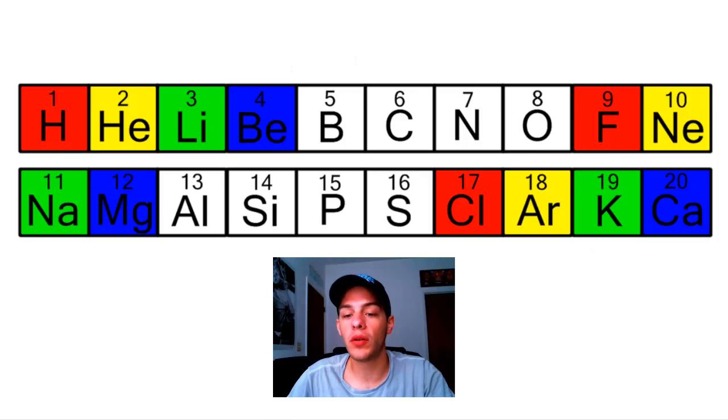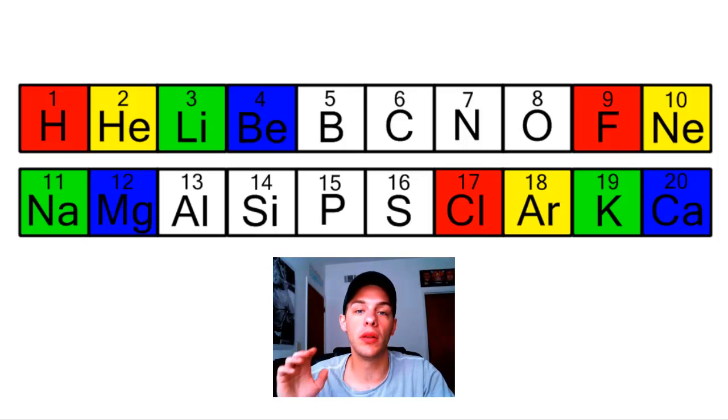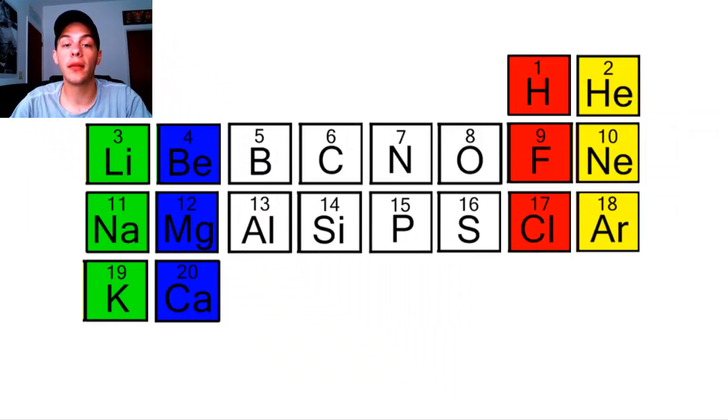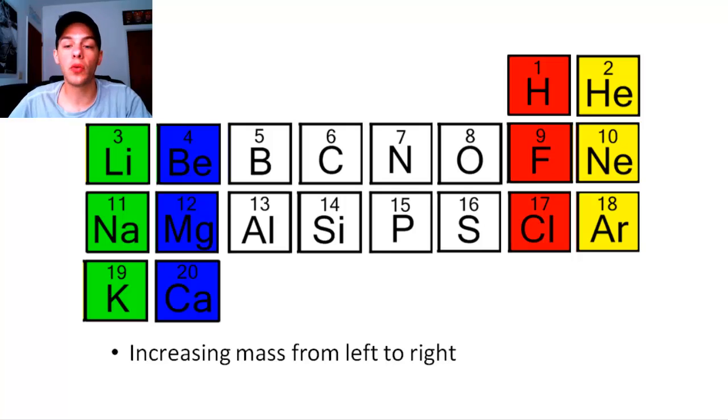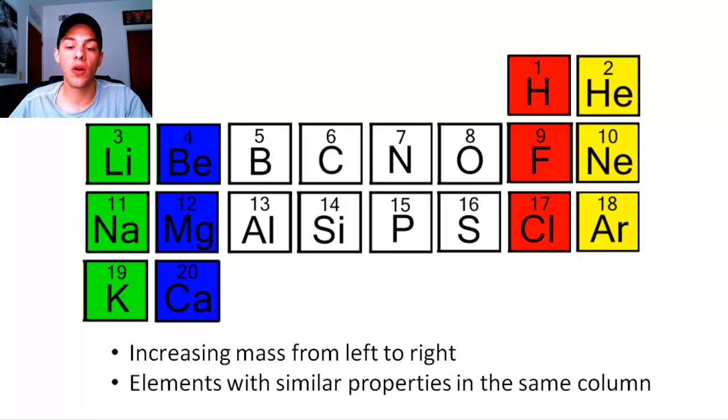And basically what Dmitry Mendeleev did was he constructed a table where the atomic mass of the elements increased from left to right. And also he put elements with the same chemical properties in the same vertical columns. So if you were to do that here with the first 20 elements, it would look something like this. So again, the atomic mass is increasing from left to right, and elements that have the same properties are shown in the same vertical columns.